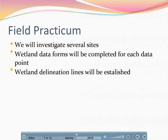The wetland data forms will be completed for each data point that we have at a site, and there will be a number of them — 10 to 20 per site, most likely. And finally, the goal of this class is to be able to identify the boundary between wetlands and non-wetlands, so we will be putting out wetland lines.